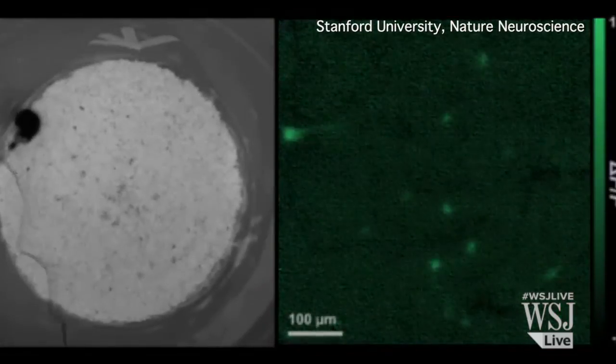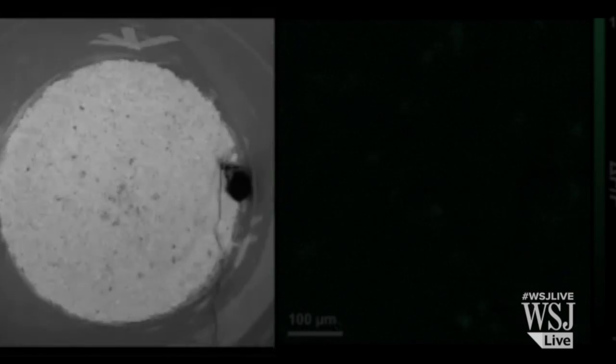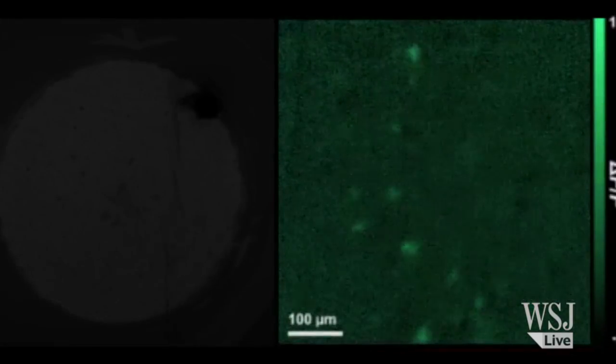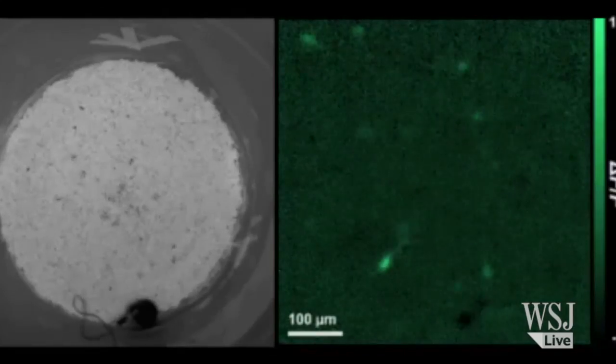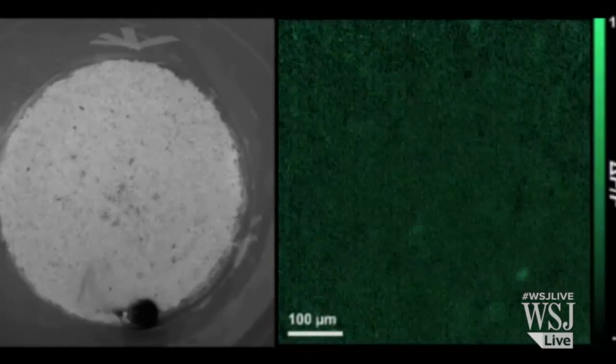As the mouse moves through its surroundings on the left, you can see the neurons firing on the right. And the researchers can tell the mouse's location just by watching the patterns of its brain cells.